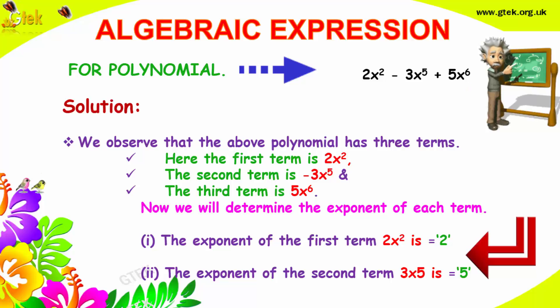Here we can observe the first term is 2x², the second term is minus 3x power 5, and the third term is 5x power 6.